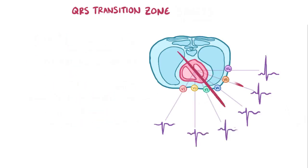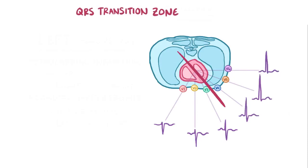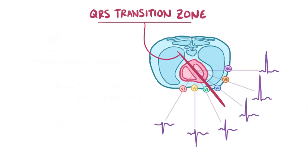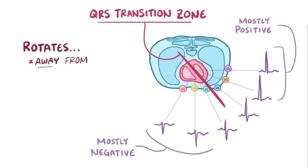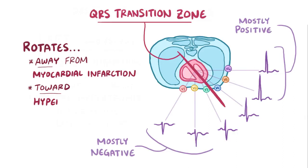As a quick recap, the QRS transition zone in the horizontal plane is where the QRS complex switches from being mostly positive in V5 and V6 to mostly negative in V1 and V2, so it normally happens in lead V3 or V4. The QRS transition zone rotates away from previous myocardial infarctions and toward hypertrophied tissue.